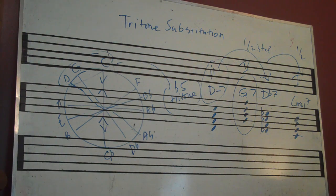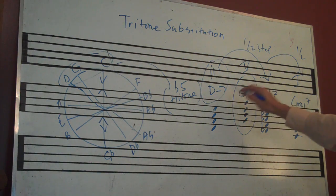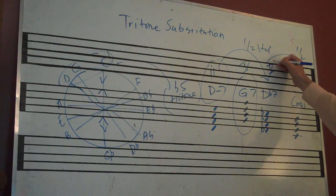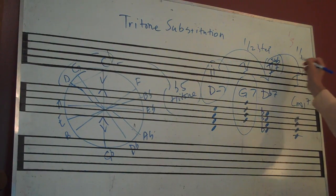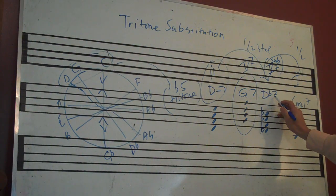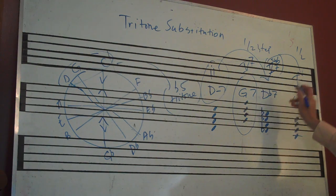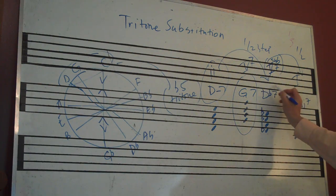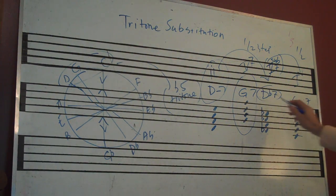This is a real nice way to change up your 2-5s. Sometimes what we call this in jazz terms is sub-5-7, because it's still a dominant chord so you still have that flat 7, but it's a tritone substitution — D flat for G7.